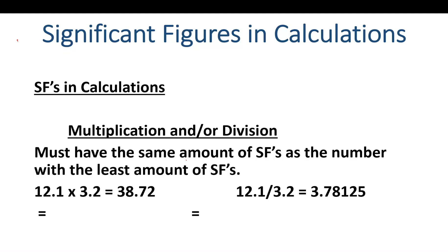Most calculations in chemistry are multiplication and/or division. The rules are the same for both operations. It's pretty straightforward: your final answer must have the same amount of significant figures as the number with the least amount of significant figures.